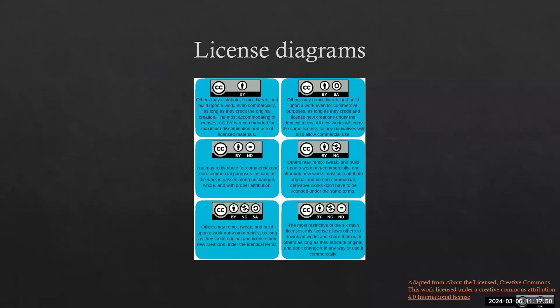Here are some of the ways you might see these licenses combined. A creator will choose to combine the icons in a way that tells the downstream user how they can use their content. With CC BY alone, you're saying this is the most open form of Creative Commons licensing — and this is what we strongly advocate authors to use in their creative works. It means downstream users can distribute, remix, tweak, and build upon the work — even use it commercially — as long as they credit the original creator.